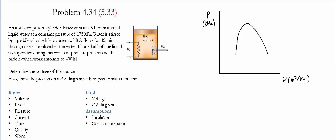The last step is to show the process on a PV diagram. State 1 starts as a saturated liquid. The pressure remains constant, and the process moves horizontally at constant pressure until the volume reaches the half-evaporated point at quality 0.5. This horizontal line at constant pressure describes the process on the PV diagram with respect to the saturation lines.